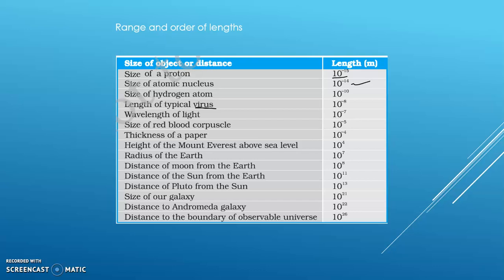Now let's look at the range and order of length. The wavelength of light is 10 to the power of minus 7 meters. The radius of the Earth is in the 10 to the power of 7 meter range. The distance of the Moon from the Earth is about 10 to the power of 8 meters, and the distance of the Sun from the Earth is 10 to the power of 11 meters. The distance to the boundary of the observable universe is 10 to the power of 26 meters.